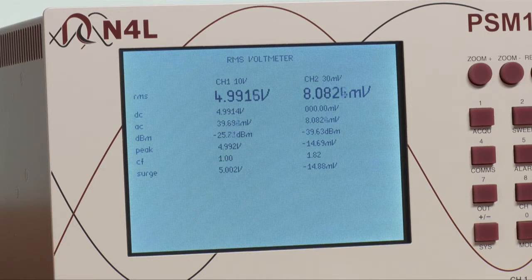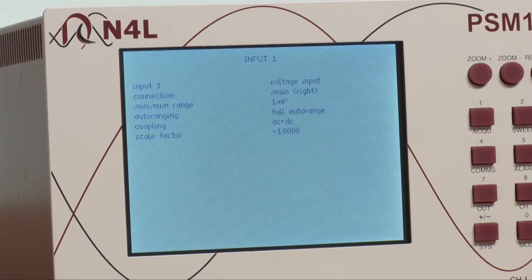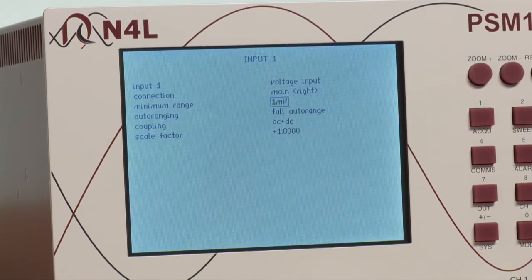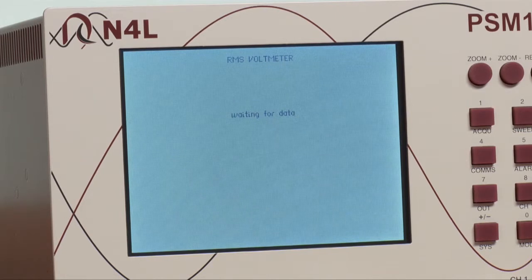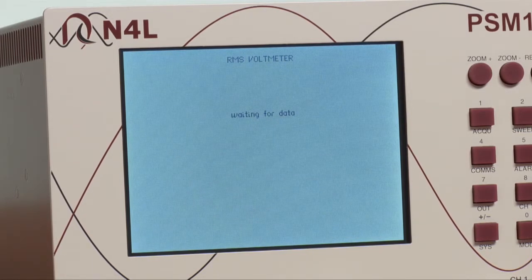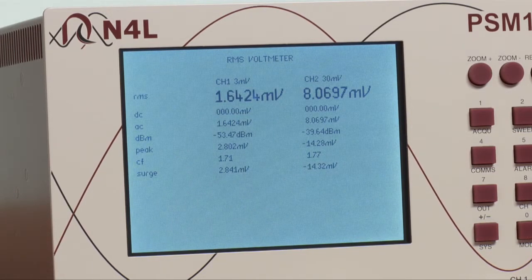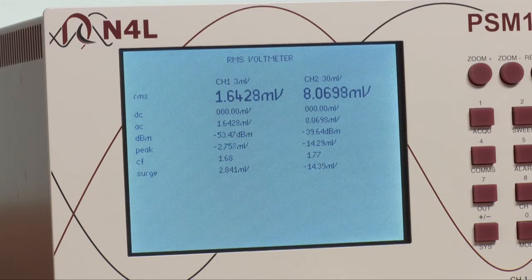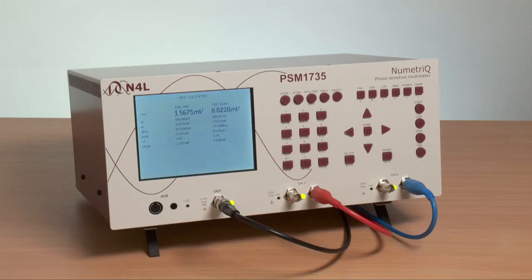We are going to set the AC coupling mode for channel 1 by going into the channel 1 menu, because for frequency response analysis we are interested in only the AC component. Now you see 1.6 millivolts on channel 1 and 8 millivolts on channel 2. Channel 1 is the input and channel 2 is the return. So there is gain.